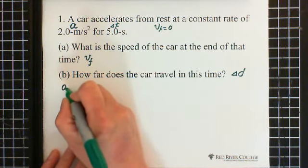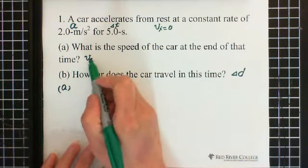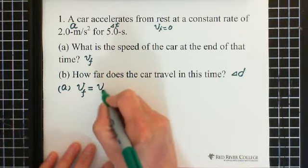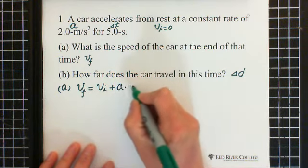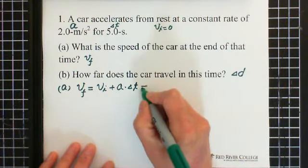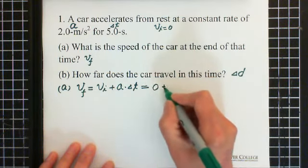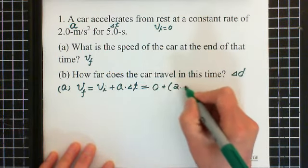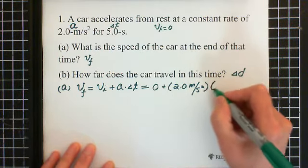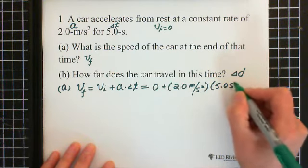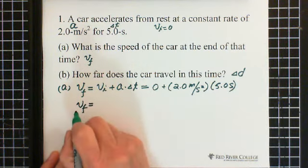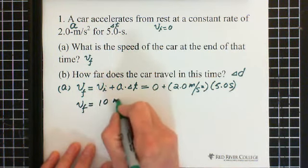Start question A. Looking for final velocity, we have the formula: final velocity equals initial velocity plus acceleration times delta t. Because initial velocity equals zero, plus acceleration is 2.0 meters per second squared times delta t of 5 seconds, so we get V final equals 10 meters per second.